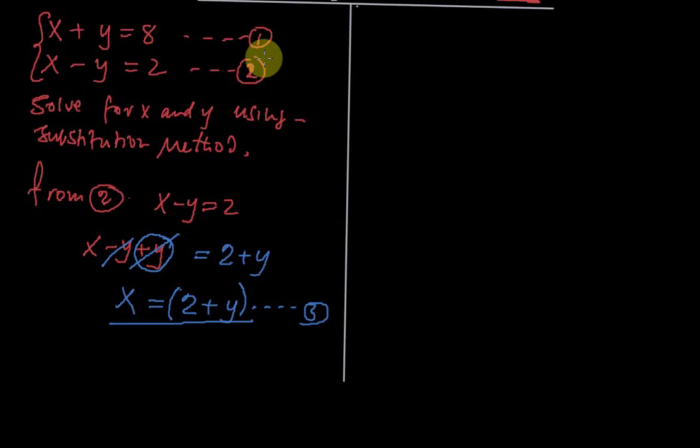So say, put x equals 2 plus y into equation number 1. So we made it from equation 2, and we put it in equation 1. You cannot make it from 2 and then put it to 2 again. Now if you made it from 2, then we put it, we said from 2, so we cannot put it again into 2. We put it into 1. So this equation will go here.